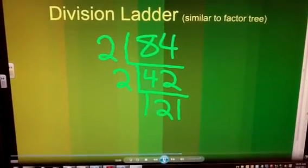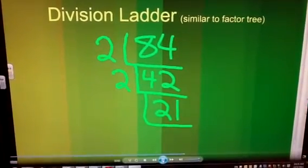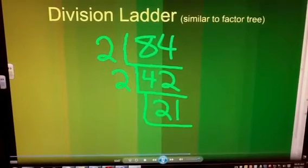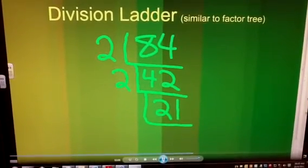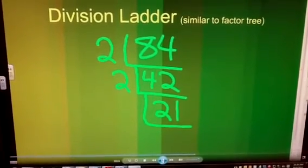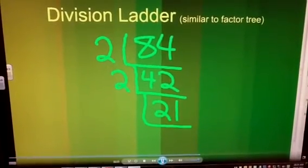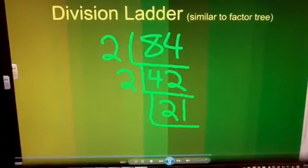I immediately recognize 21 as an odd number, and I know that it is not divisible by two. So I'm going to move on to my next lowest prime number, which is the number three. And I ask myself, is 21 divisible by three?